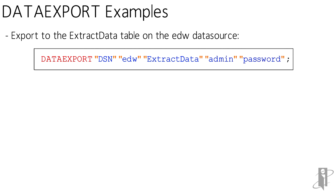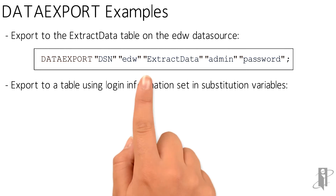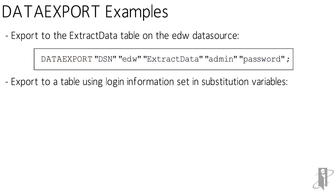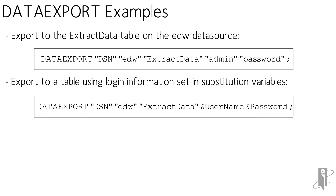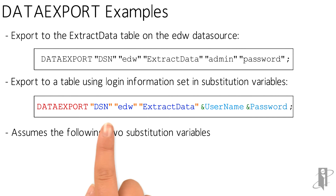Maybe we don't want to hard-code our username and password into the script. We could put in substitution variables and then set the substitution variable for our username and password, run the script, and then clear out the substitution variables so they're only stored for the duration of the script. We'd say data export DSN EDW extract data, and use &username and &password to pull in those substitution variables. In our case, our username is Samir and our password is the animator.